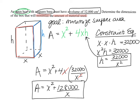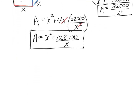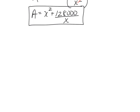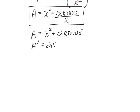To find the minimum we use the first derivative. I'll rewrite 128,000 / X as 128,000 · X⁻¹ to avoid the quotient rule. Taking the derivative: the derivative of X² is 2X, and the derivative of 128,000 · X⁻¹ is −128,000 · X⁻². So A′ = 2X − 128,000X⁻². This form is easier to work with for finding critical numbers.